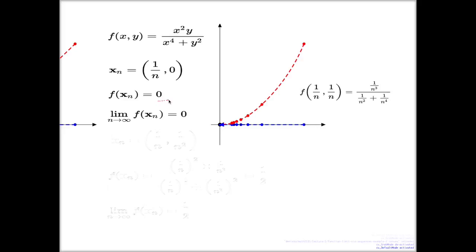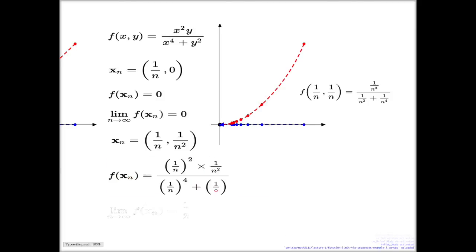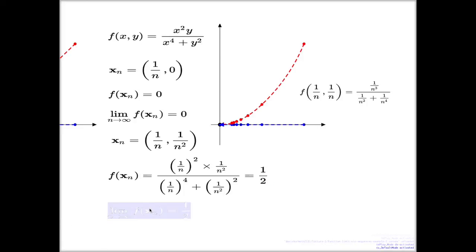But if you take the approach along the parabola — that is, the sequence (1/n, 1/n²) — and do the computation for this approach, the function delivers one half again. So this time we managed to find two approaches which deliver different values: one gives 0 and the other gives 1/2. That's why we can conclude again that the limit of this function when approaching 0 does not exist.